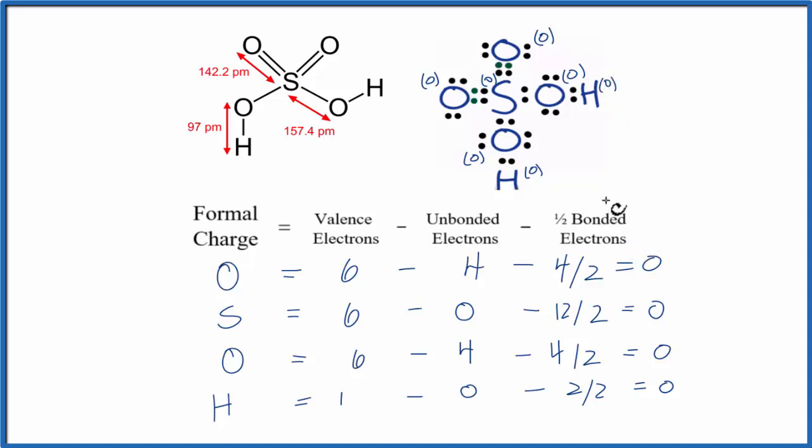So we found the formal charges for each element. They're all zero, and that is what we would expect for the best or most likely Lewis structure for H2SO4. So by finding that the formal charges are zero, that supports the idea that this is the correct way to draw the Lewis structure for H2SO4. This is Dr. B with the formal charges for each of the elements in H2SO4, sulfuric acid. Thanks for watching.